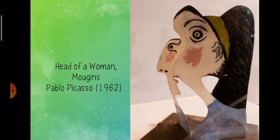However, the subject is being represented in a form of abstraction — it is abstract — because this is not how the head of a woman would look in real life. It is distorted using lines, shapes, and curves. So it is representational but in an abstract representation of the subject.